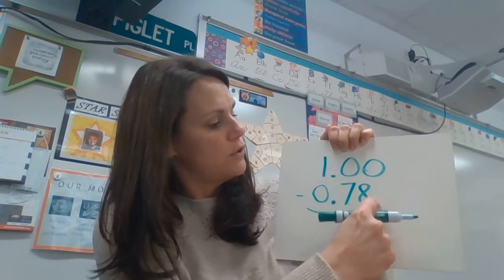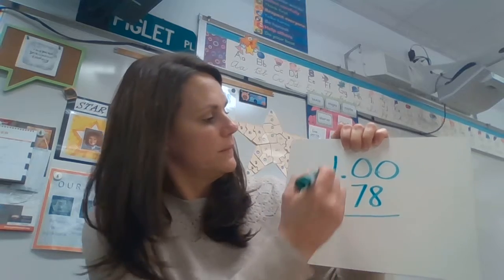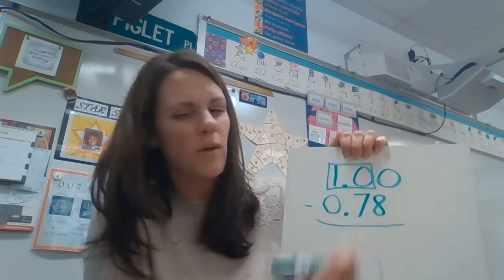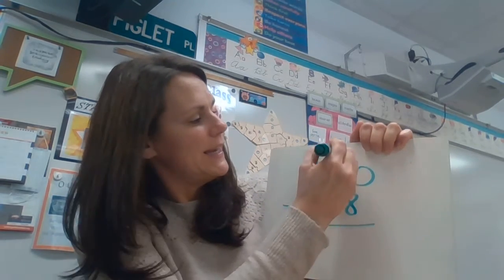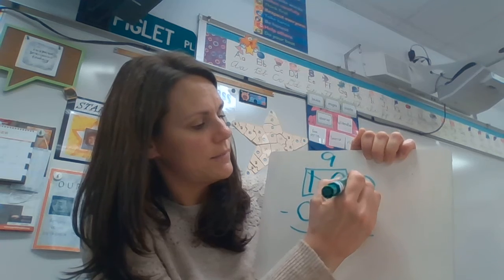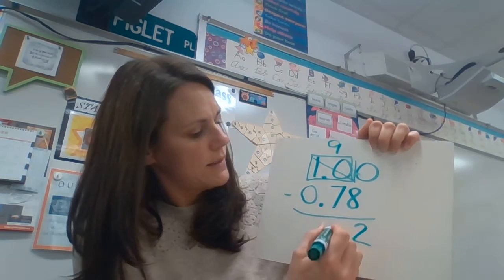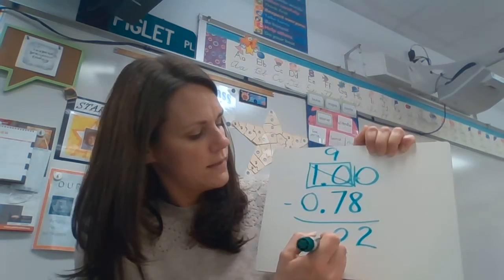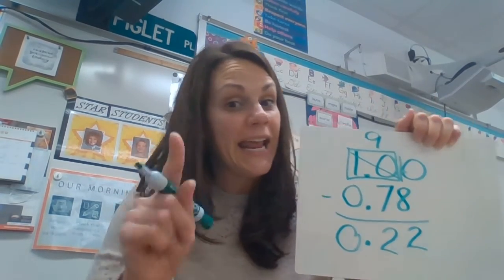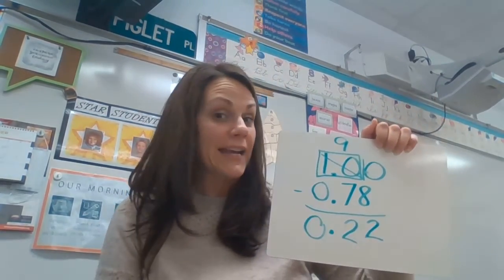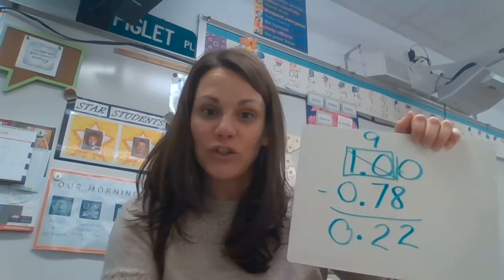This looks like a possibility for the box trick. I do need to regroup: bigger bottom, better borrow. There is a zero in the middle — just box right over that decimal, almost like we don't have to worry about it right now. The ten becomes a nine, the zero becomes a ten. Ten minus eight, nine minus seven — don't forget the decimal — gives us 22 cents. You can always check by adding 22 cents plus 78 cents, and that should give you a dollar.